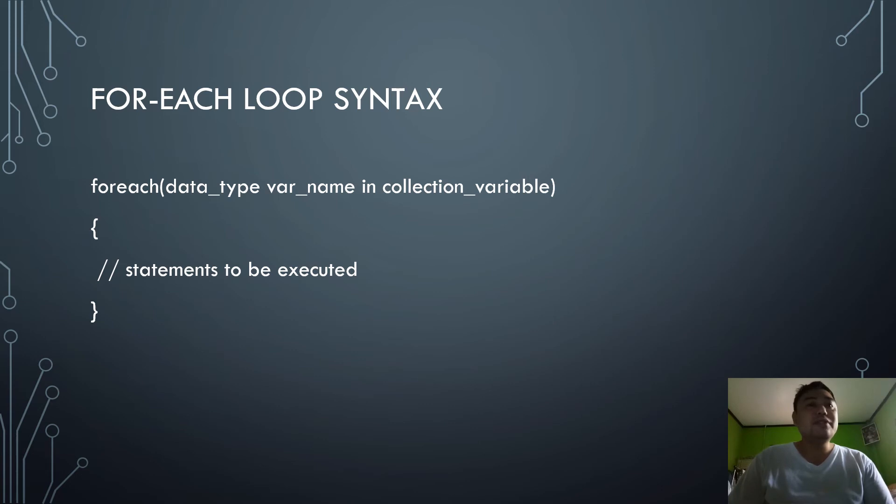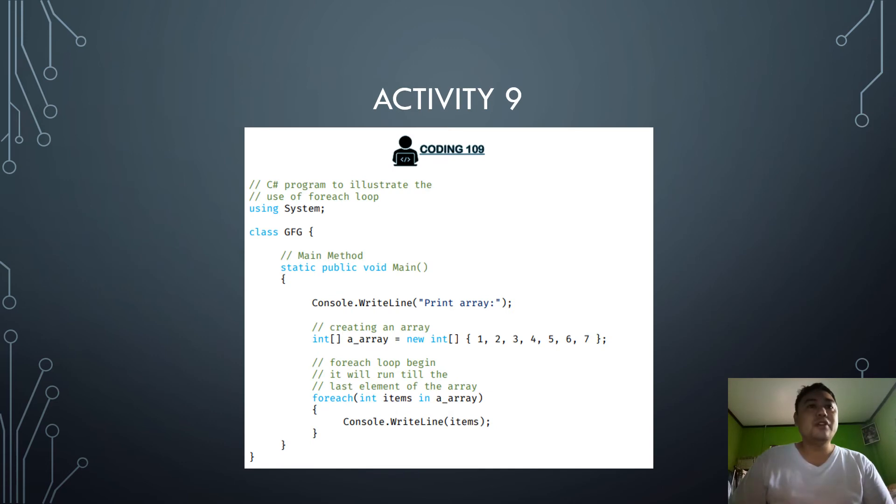The syntax is for each loop. You have the for each, then the data type, the variable name in collections, and other variables. Then, the start statement, the body, which the statements are to be executed, and of course, the end statement will be ended with a close brace. On activity number nine, you are given the chance to encode for each loop and then upload it to our Google Classroom.